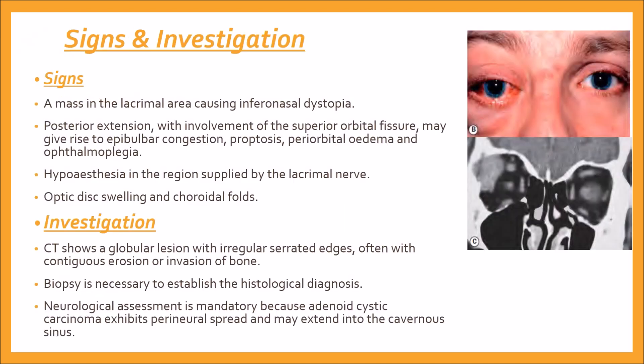Upon examination, a mass in the lacrimal area causing inferonasal dystopia is seen. Posterior extension with involvement of the superior orbital fissure may give rise to epibulbar congestion, proptosis, periorbital edema, and ophthalmoplegia. Hypoesthesia in the region supplied by the lacrimal nerve is also observed. Optic disc swelling and choroidal folds are seen.